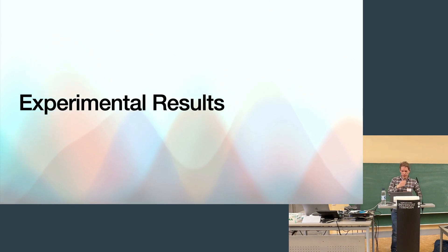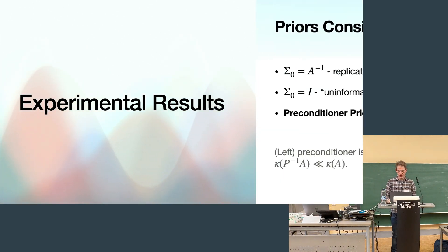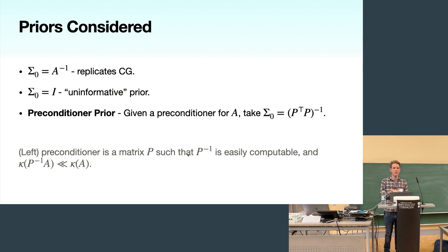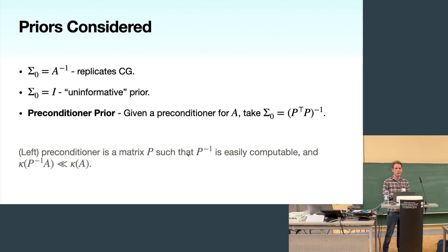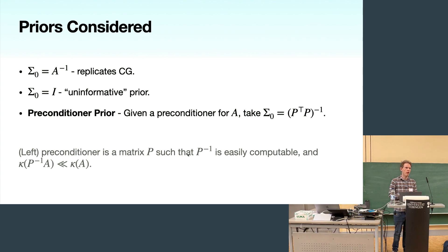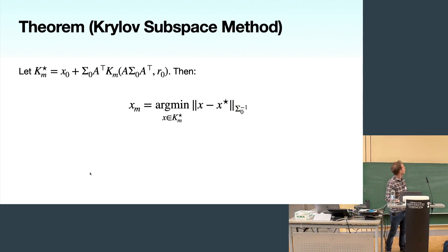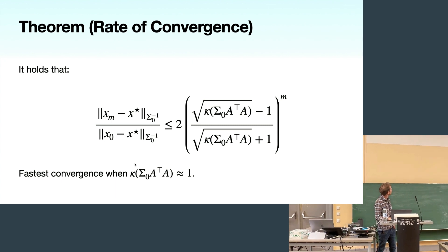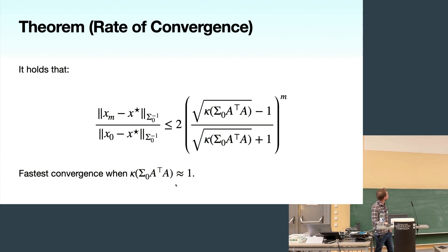In the last few minutes, I'll talk about experimental results from a simple simulation study, comparing three prior choices. First, Σ_0 = A^{−1}, which replicates CG. Second, Σ_0 = I, the uninformative prior. Third, a preconditioner prior. The experimental setup uses a random sparse matrix A with D = 100, multiple test problems X* drawn from a unit Gaussian, and Bayes-CG run for M = 100 iterations, which should give full convergence.